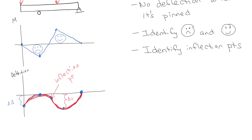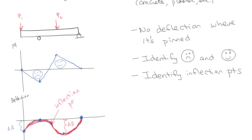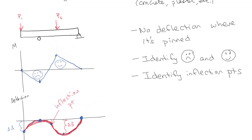So delta A and delta B are unknowns — conditions we would need to find. Right now we're just getting a general idea. At some point we'd need real numbers to get our max deflections, which is what delta A and delta B represent. It should make sense that we're not going to have any deflection where it's supported, and we're going to have max deflections where external forces are being applied.